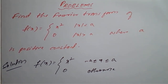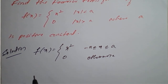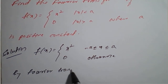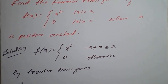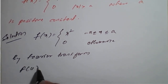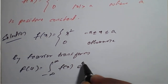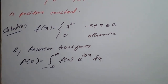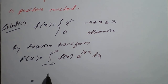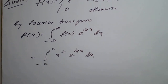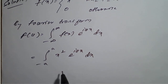Since f(x) is 0 outside the interval, we will not consider those limits for integration. By the definition of the Fourier transform, capital F(u) is equal to the integration from minus infinity to plus infinity of f(x) times e raised to iux dx. Replacing f(x), this becomes the integration from minus a to plus a of x² times e raised to iux dx. We need to apply Bernoulli's rule of integration.